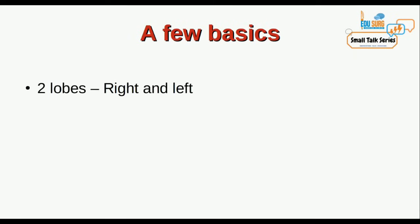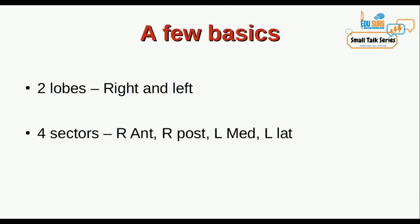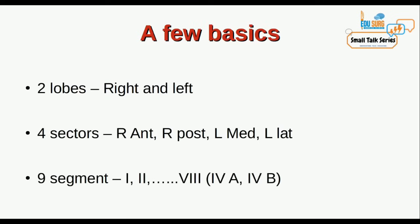The liver has two lobes — right and left — or the two hemi-livers as they are called, which are divided into four sectors: right anterior, right posterior, left medial, and left lateral. There are nine segments in the Couinaud classification — nine because segment four is divided into 4a and 4b.